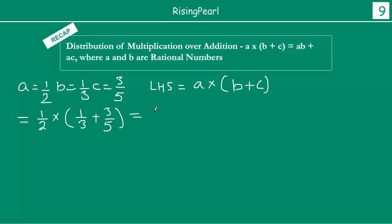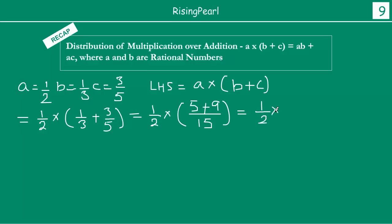If you solve this, you first need to add B and C inside the bracket. The LCM of 3 and 5 is 15. So: 5×1 = 5, and 3×3 = 9. This becomes 1/2 multiplied by (5 + 9)/15, which is 1/2 × 14/15. Now 2 and 14 cancel to give 7, so you get 7/15.